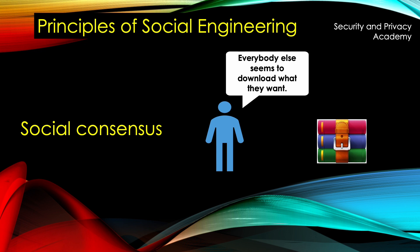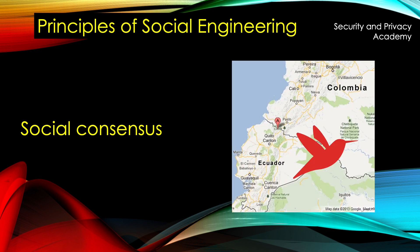The next principle is social consensus, meaning that people do what's socially expected of them and what others do. When you work in a company and the cybersecurity climate is such that everybody just opens every attachment willy-nilly, then you will very likely do that as well. That happened, for example, in the Blind Eagle attack on Colombia and Ecuador, where people just downloaded and opened everything because they were used to doing it and it was basically expected of them.